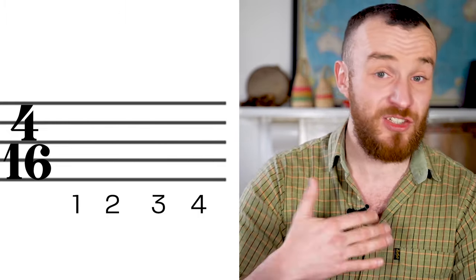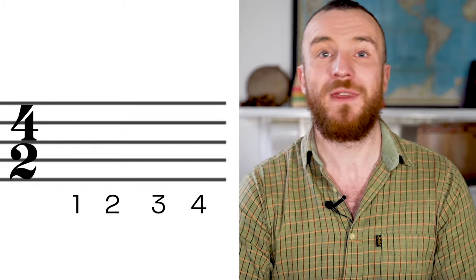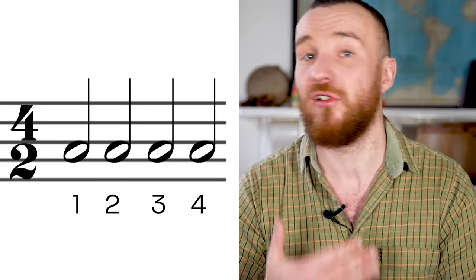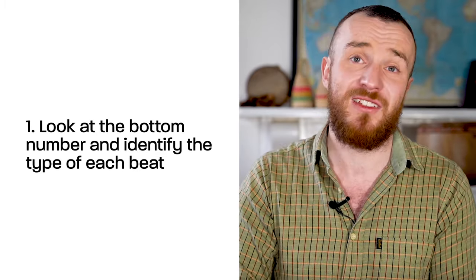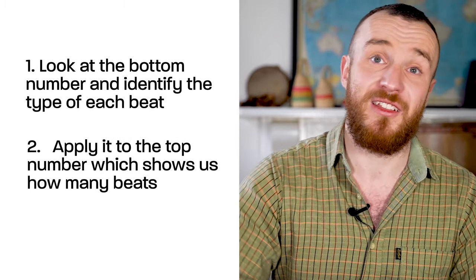If we swap it out for a 16, we would have four semiquavers or four sixteenth notes in a bar. Now if we replace that 16 with a two on the bottom, that would mean that we have four half notes or four minims in every bar. So my formula is look at the bottom number first, identify what the value of each beat is going to be, and then apply it to the top number.